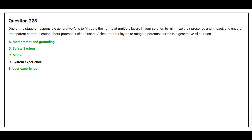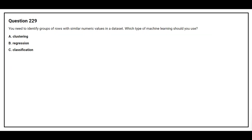Question 229: You need to identify groups of rows with similar numeric values in a dataset. Which type of machine learning should you use? Option A: Clustering. Option B: Regression. Option C: Classification. The correct answer is Option A: Clustering.